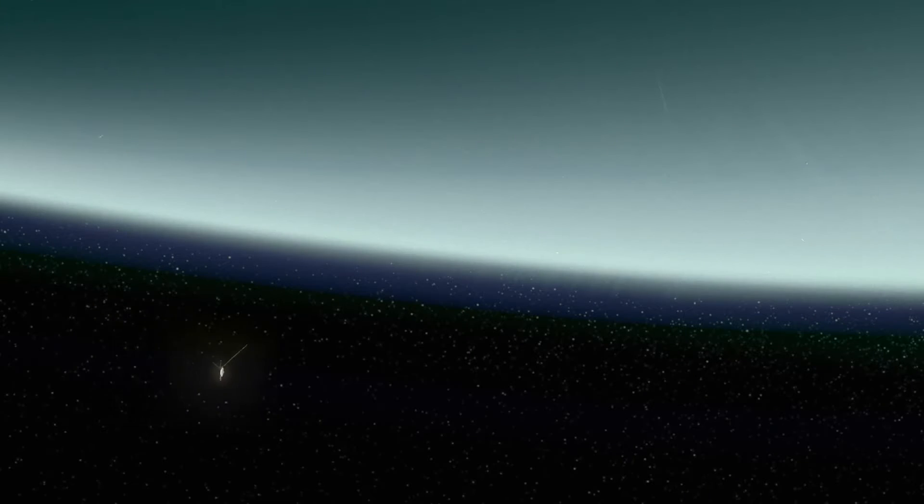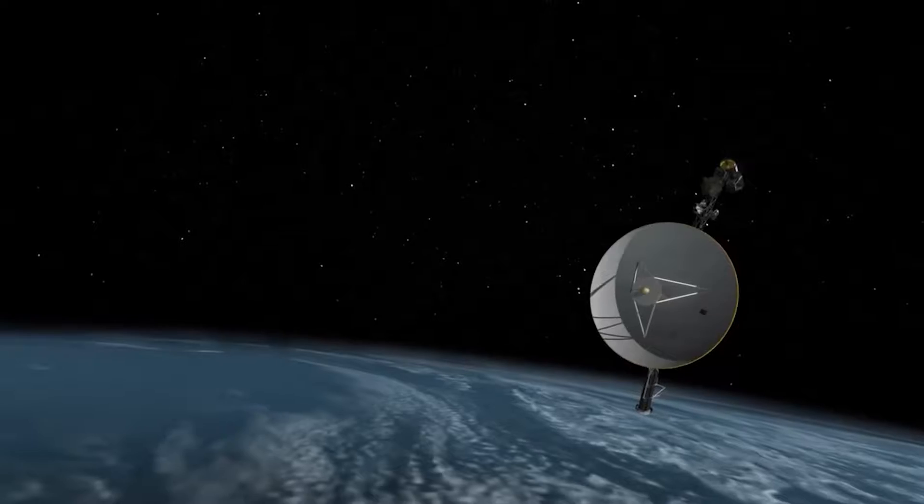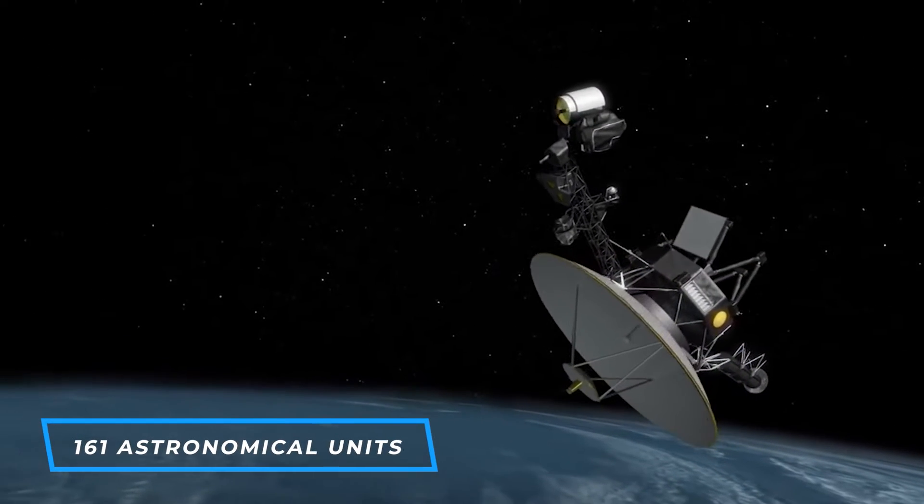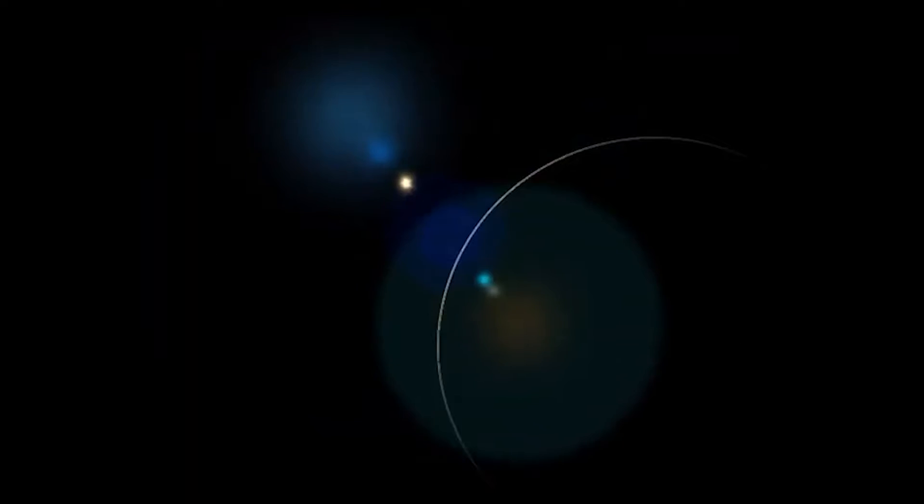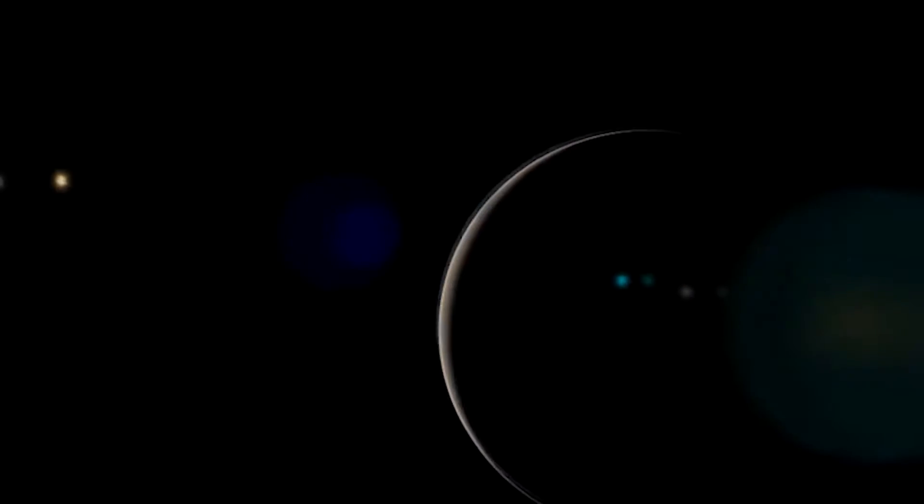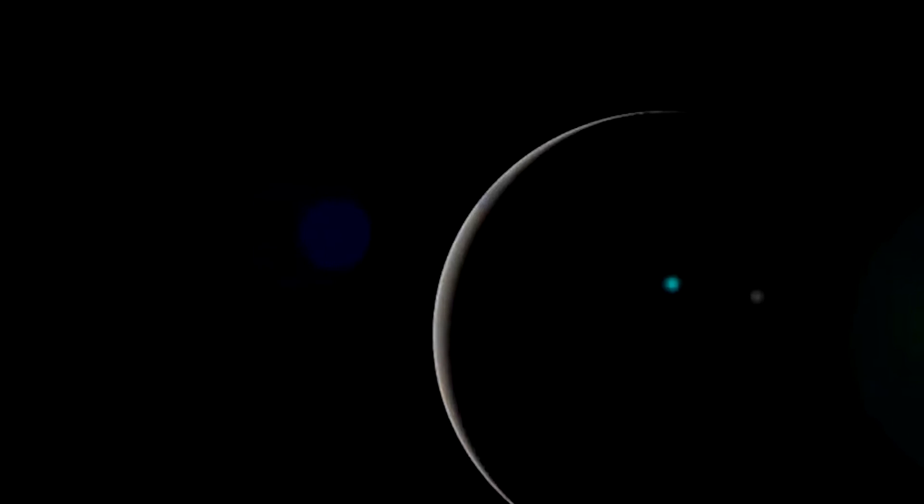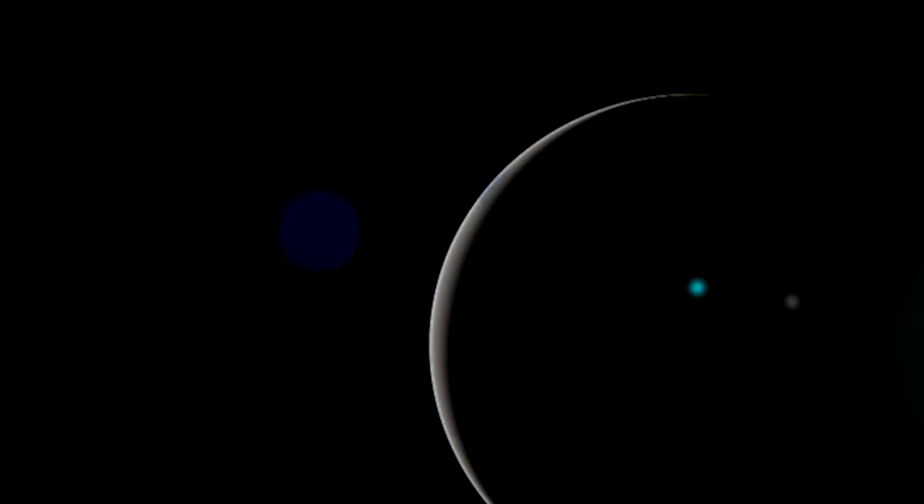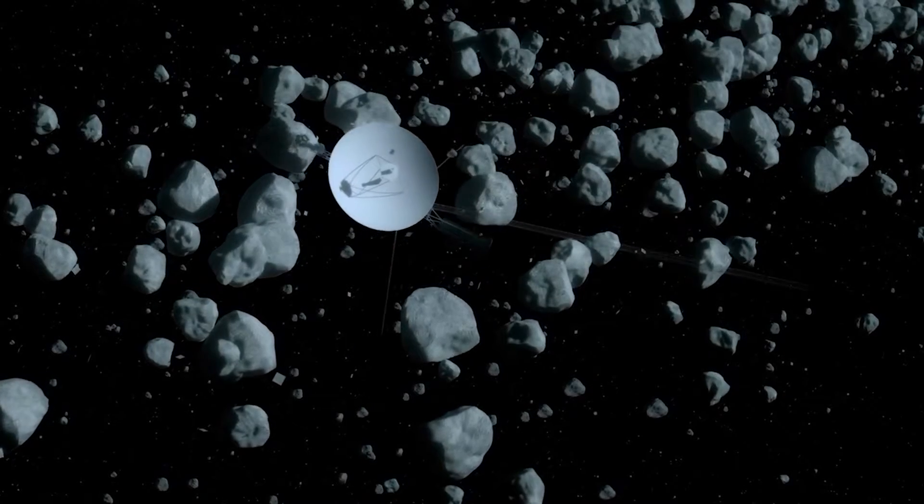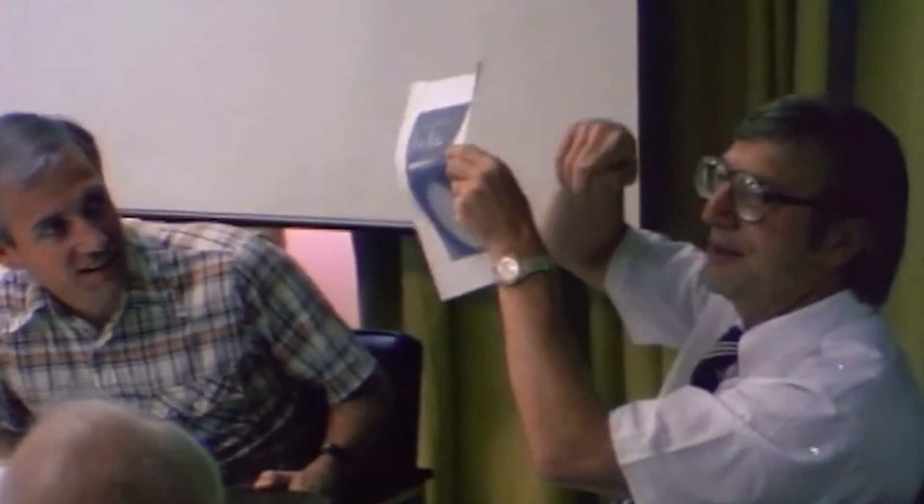Fast forward to September 2023, Voyager 1 had achieved an astonishing distance of 161 astronomical units AU from Earth. To provide some context, 1 AU is the average distance between Earth and the sun, which is approximately 93 million miles. This incredible feat establishes Voyager 1 as the most distant human-made object from Earth. It stands as a testament to the audacity and vision of the mission's planners and engineers.